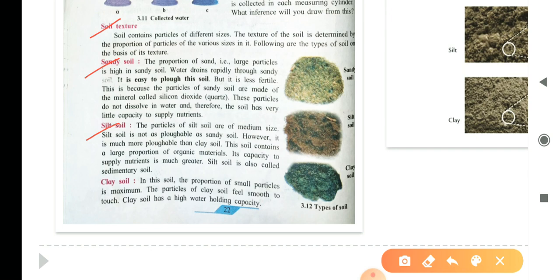Third type is clay soil. In this soil, the proportion of the small particles is maximum. The particles of clay soil feel smooth to touch. Clay soil has high water holding capacity.